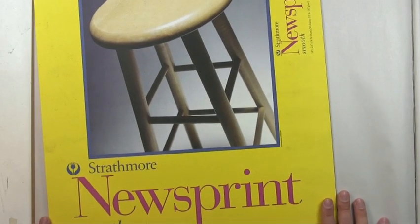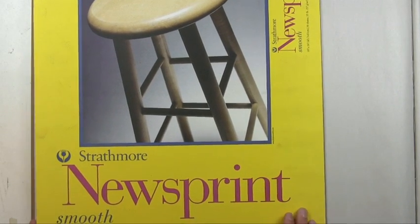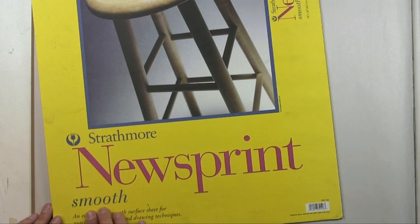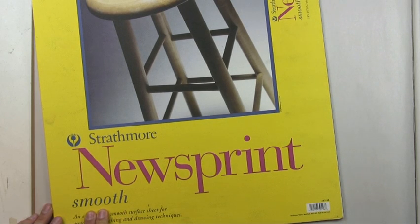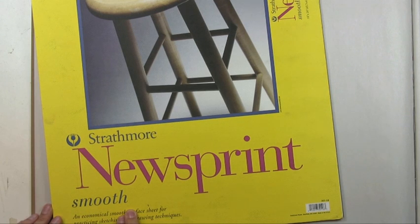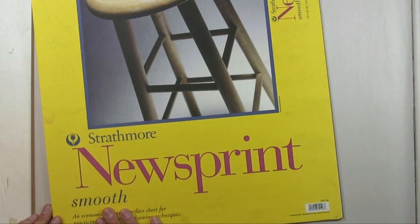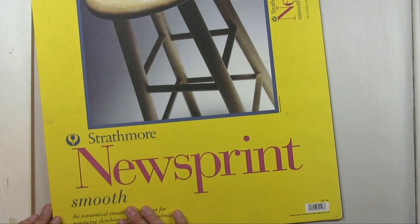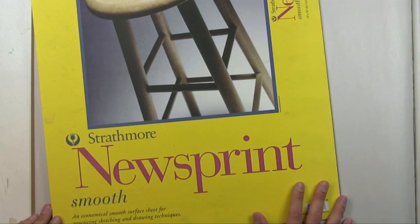So the paper that I basically use is Strathmore newsprint. The most important thing actually about this is that it's smooth newsprint. In drawing schools, lots of times the teachers just have you working on rough and it's just not the same thing. It's actually very important that it's smooth. This is an 18 by 24 pad. Sometimes I'll use pads larger than this, but typically not smaller than this for figure drawing.